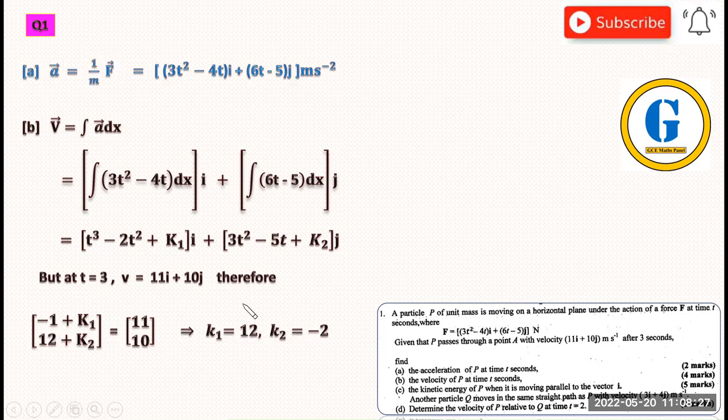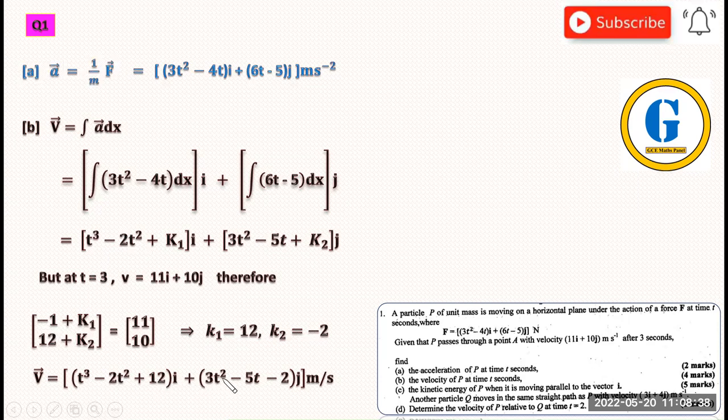Therefore, the velocity of this particle at any time will be given by V = (t³ - 2t² + 12)i + (3t² - 5t - 2)j meters per second. This gives us the velocity of the particle at any given time t.